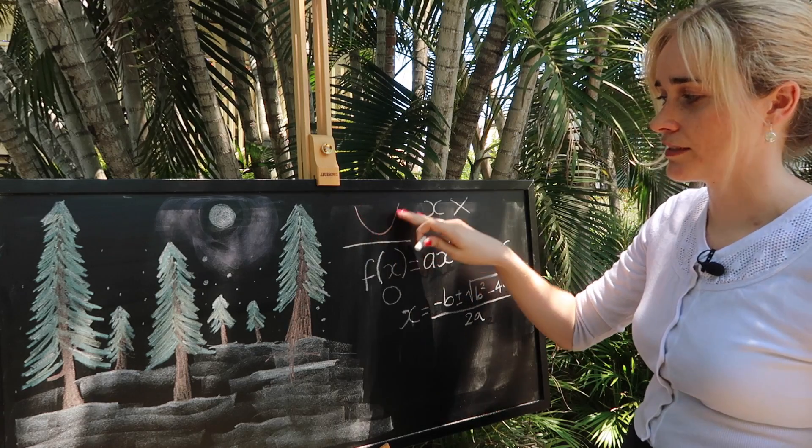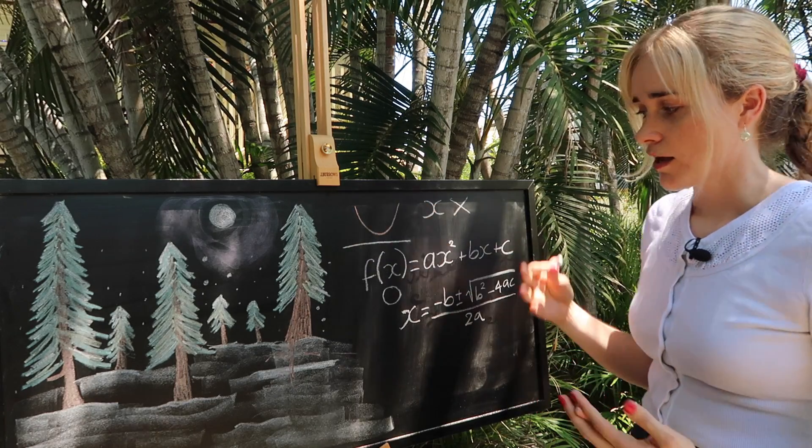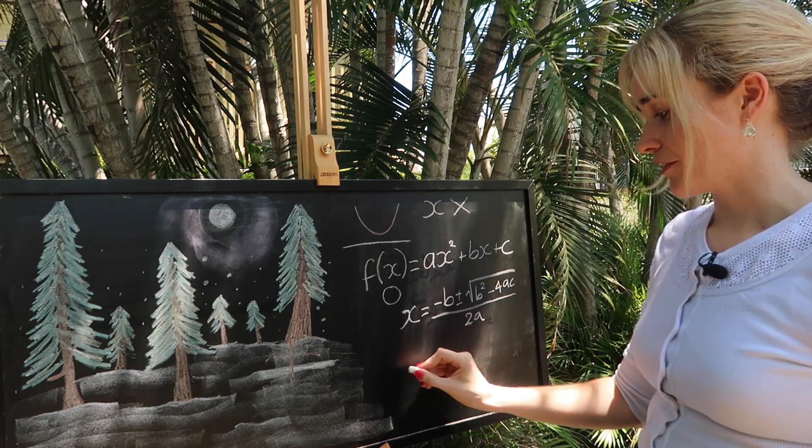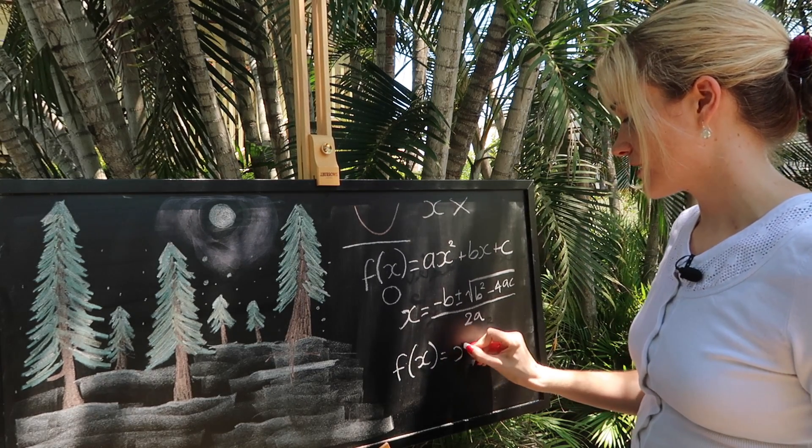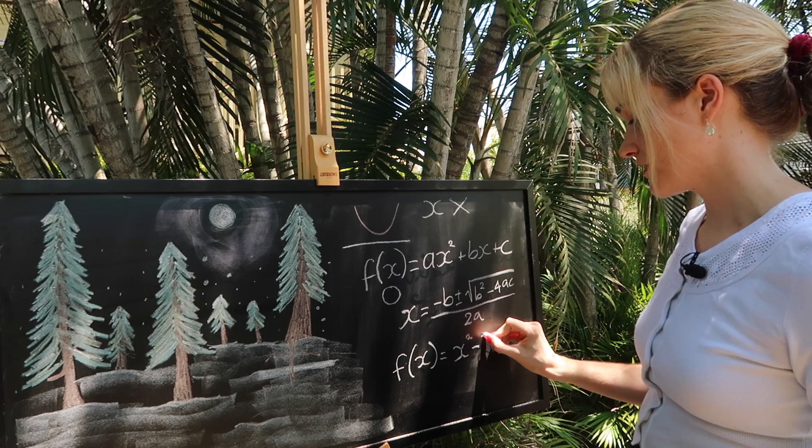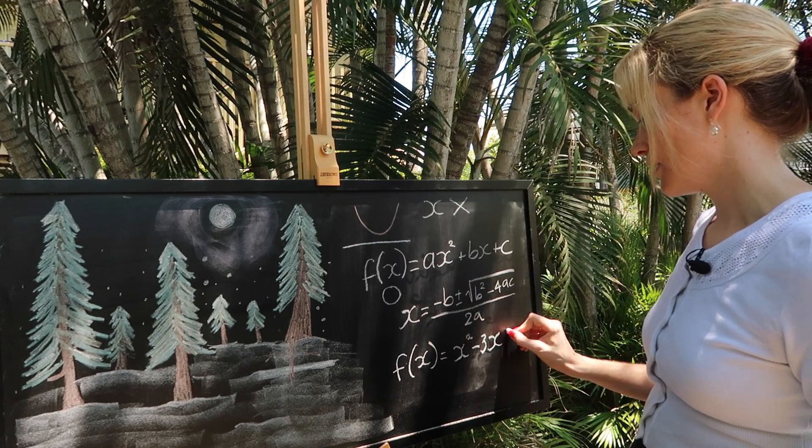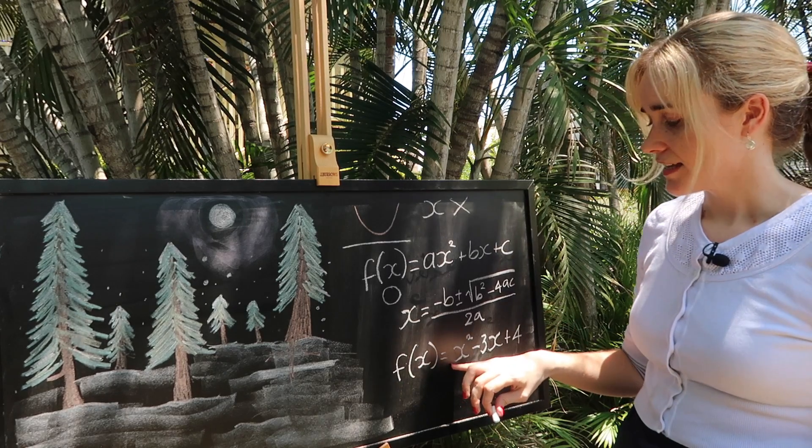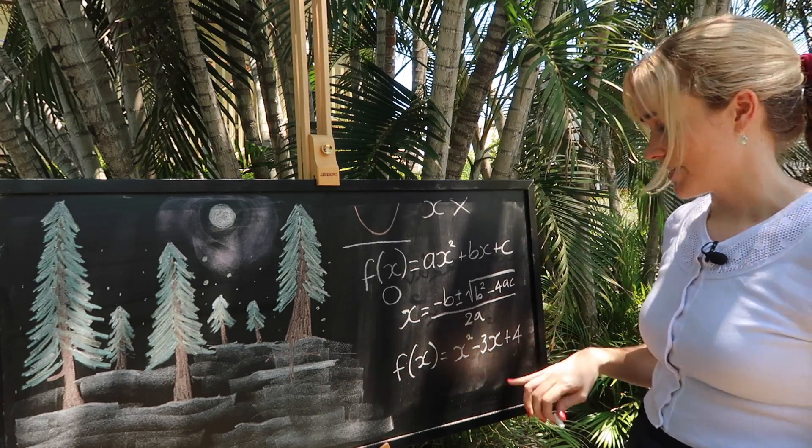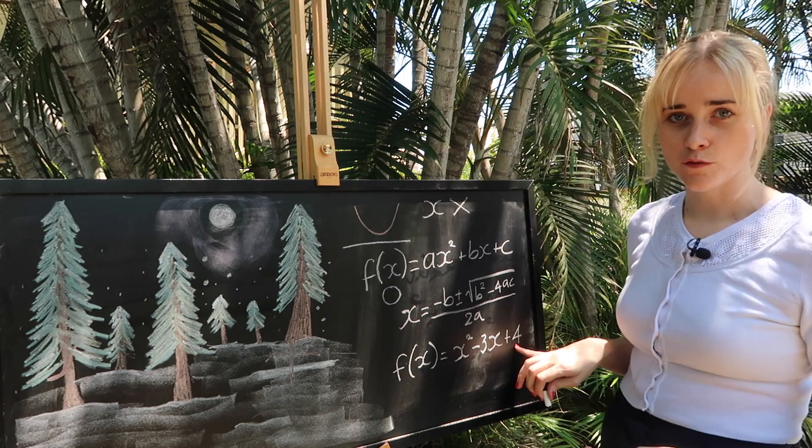Now with our little quadratic here, I know that the equation for him is f(x) = x² - 3x + 4. That means that our a is 1, our b is minus 3, and our c is 4.